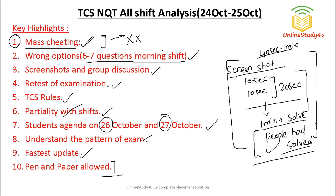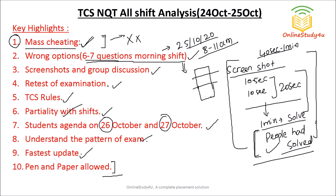Today's morning shift — 25th of October, 8 to 11 AM — was a very irritating shift for students because they struggled a lot. When 6 to 7 questions have wrong options, it's not just diverting your attention, it is demotivating you. When you solve a question and don't find your answer in the options, it creates panic — you recheck your calculation again and again. A question that should take 40 seconds now takes 1 minute 40 seconds. As a student who was writing exams 4–5 years ago, I know that pain.